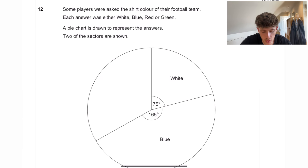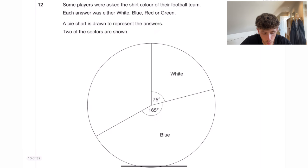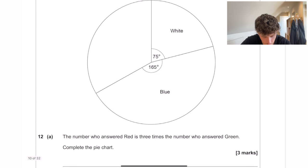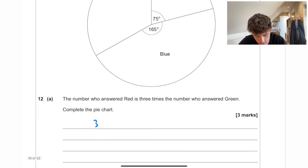Some players were asked the shirt colour of their football team. Each answer was either white, blue, red or green. A pie chart is shown. Two of the sectors are shown. We need to complete the pie chart. So the pie chart has to add up to 360 degrees.